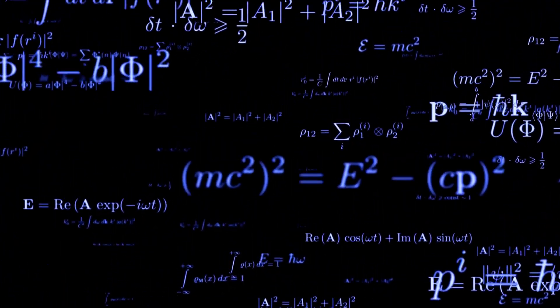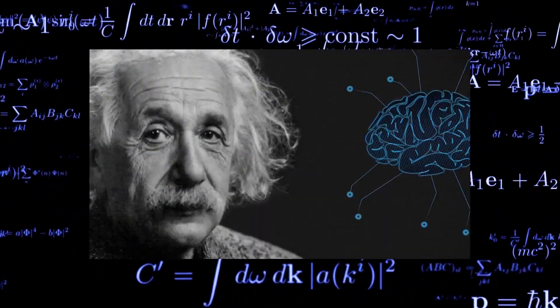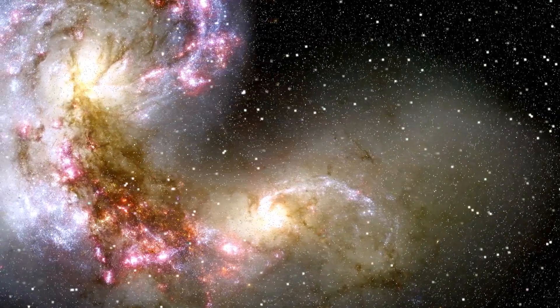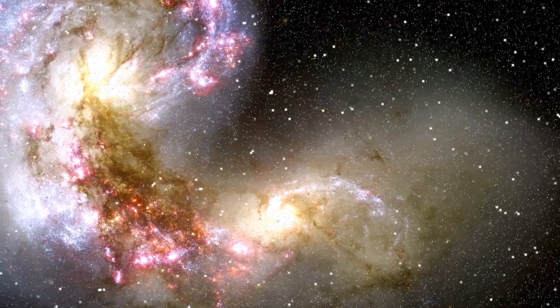And guess who gets another confirmation of this theory? Albert Einstein and his revolutionary theory of general relativity, which predicted that light could be bent by gravity. This observation fulfills Einstein's prophecy, reaffirming the brilliance of his ideas.